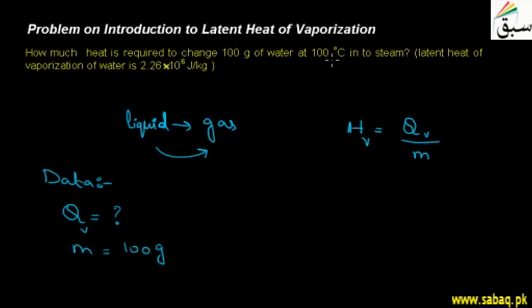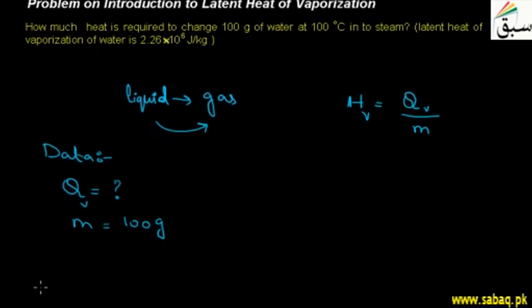Then, the temperature is 100°C, which is the boiling point of water. The latent heat of vaporization is also given, denoted as HV where V is for vaporization: 2.26 × 10^6 joules per kg.